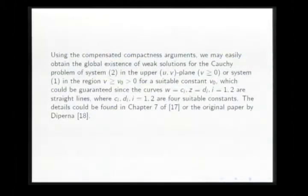Well, using the compensated compactness argument, we may easily obtain the global system of weak solution for the Cauchy problem to system two in the upper UV plane in this region. Here, this condition, of course, is to guarantee the genuinely nonlinear system. Here, V is bigger than V0. V0 is a positive constant, which could guarantee the level sets of the Riemann invariant and the straight lines, where CI and DI are suitable constants. For this proof, see chapter 7 of reference 16. Of course, this is in all the books, the books of Dafermos, or the books of Professor Serre.